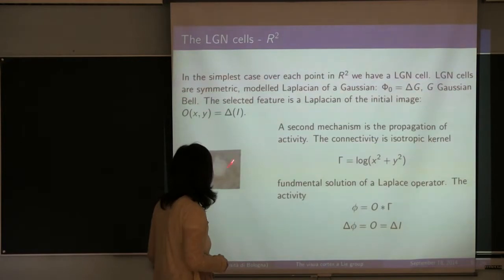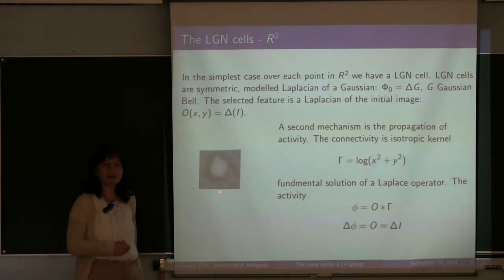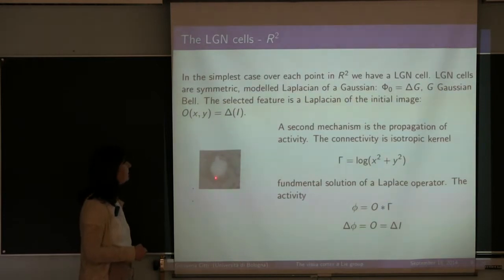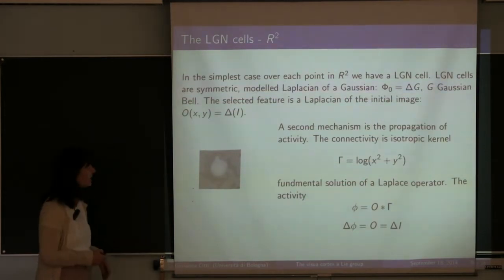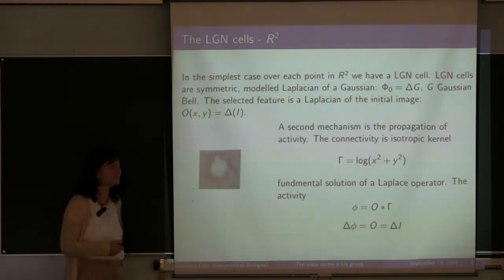The first family of cells, of which I would like to say a word, is the LGN. Over each point we have symmetric cells. You see it has this shape. And this shape is the Laplacian of a Gaussian. So it has almost approximately this feature and it is modeled as a Laplacian of a Gaussian. And the mechanism described before at every point of the image, so we have one copy of this over each point of the retina. And the output at every point after the selection of maxima is the Laplacian of the image at every point. So this is a very schematic representation of the previous mechanism.